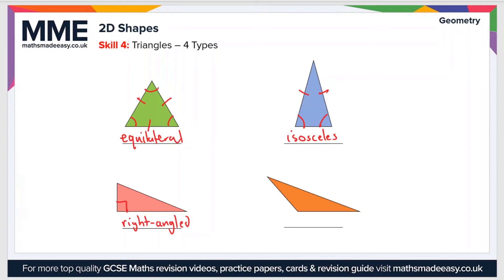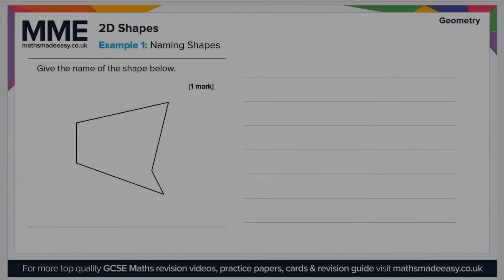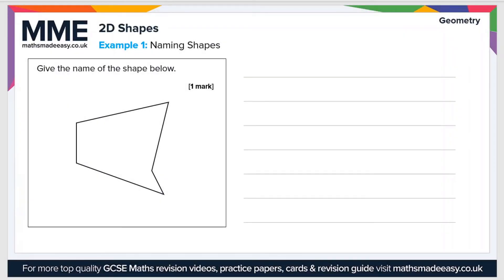There are no other specific features in a right-angle triangle. Finally, the last type is a scalene triangle — that's just a triangle that has no equal sides and no equal angles. For example: give the name of the shape below. Counting the sides: one, two, three, four, five. No equal sides or angles, so it's an irregular pentagon.